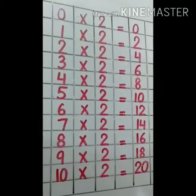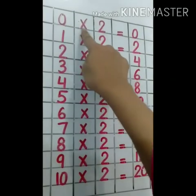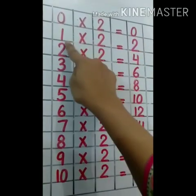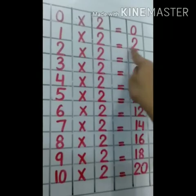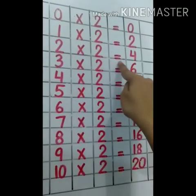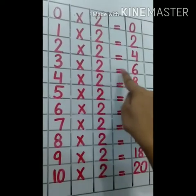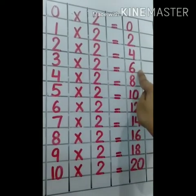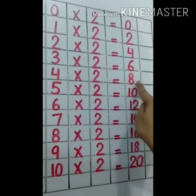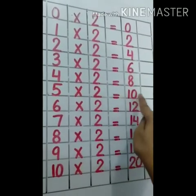Okay students, let's read again. Zero time two is zero. One time two is two. Two times two is four. Three times two is six. Four times two is eight. Five times two is ten.